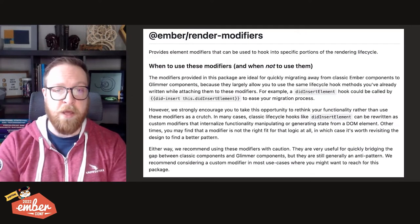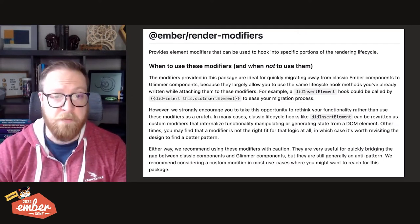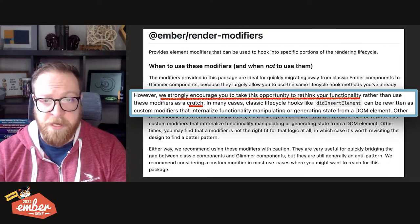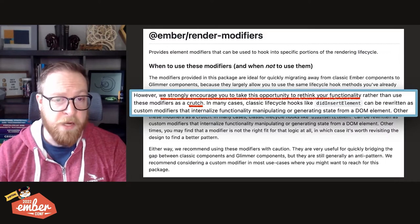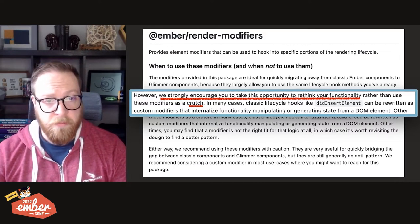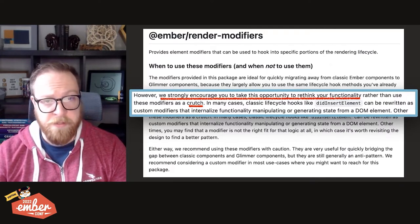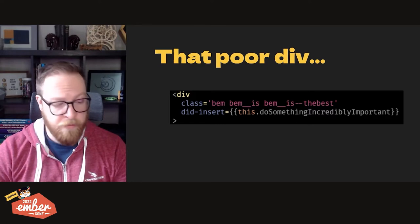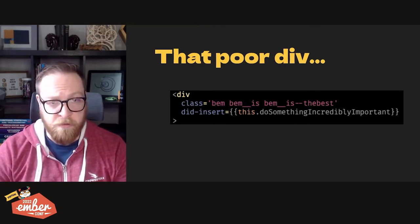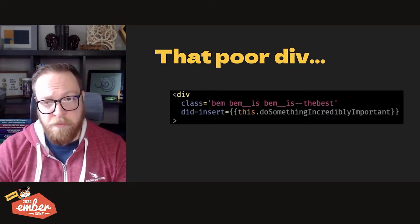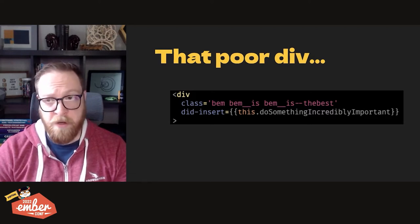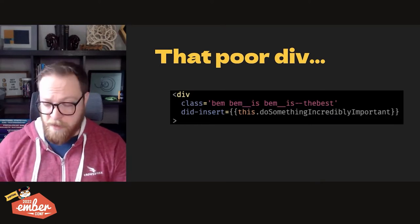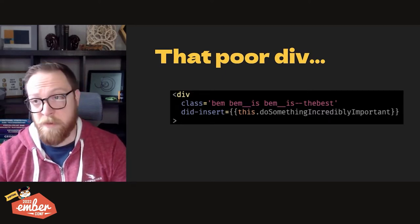I understand render modifiers is a way to migrate away from old Ember lifecycle hooks that have been removed. But as I read the docs, I came across this statement: "We strongly encourage you to take this opportunity to rethink your functionality rather than use these modifiers as a crutch." In our codebase I see a lot of this — a div with a did-insert hook calling important API work like fetch. I kept thinking: that poor div has no idea the weight of the world is resting on it, even though the modifier has nothing to do with the element itself.